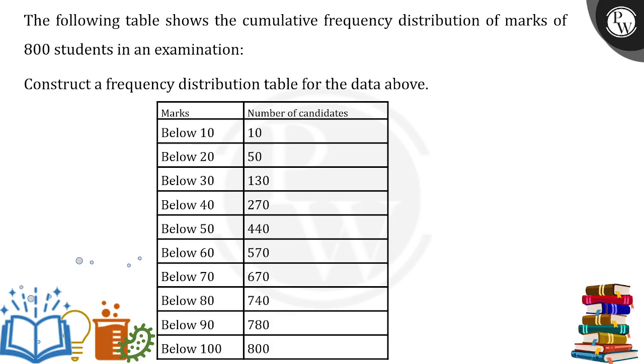We have to simply make up the intervals. If I talk about the CI, the class interval over here, the first is from 0 to 10. For that, the number of students, that means the frequency, is 10.